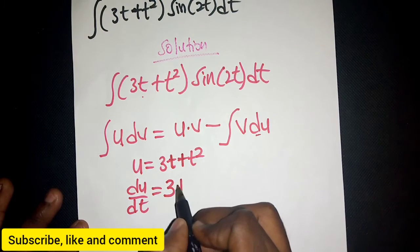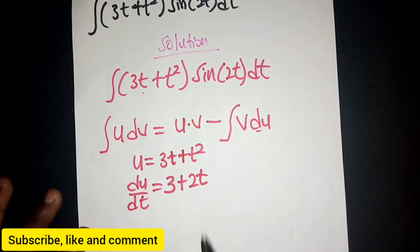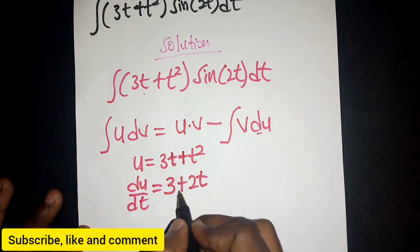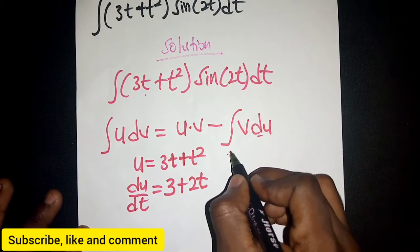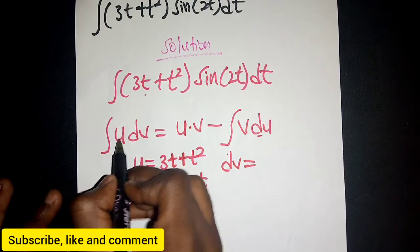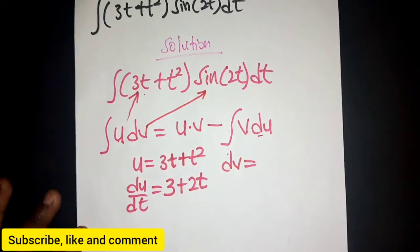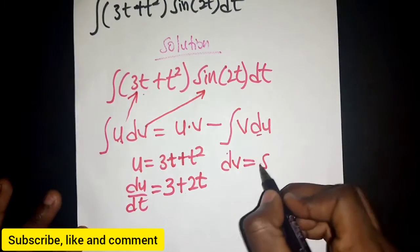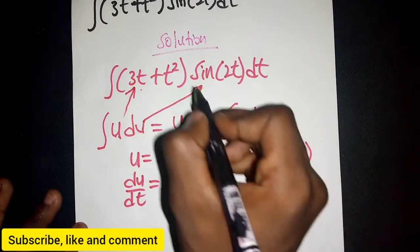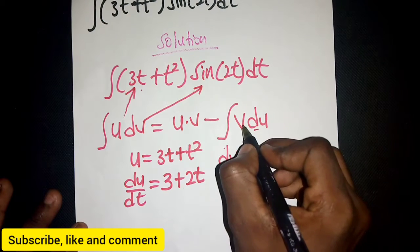Differentiating u = 3t + t², we get du/dt = 3 + 2t. And dv is sine(2t) dt. So dv = sine(2t) dt.